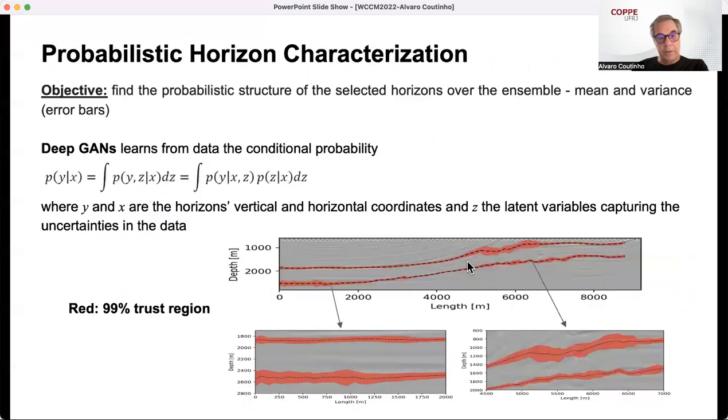With this, we can characterize the probabilistic horizontal horizons with the objective to find the probabilistic structure of the selected horizon over the ensemble to give the interpreter error bars. We use, again, machine learning deep GANs to learn from data the conditional probability, where Y and X are the horizon vertical and horizontal coordinates, and Z, the latent variables capturing uncertainty in the data. With this, we can, for the selected horizons, show the interpreter regions where we have a 99% chance of this horizon is located.